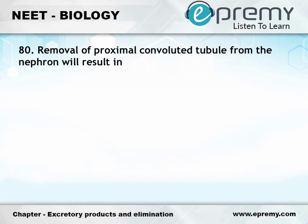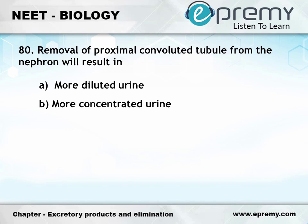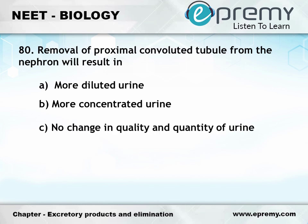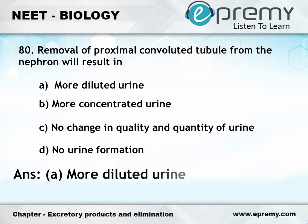Question number 80: Removal of proximal convoluted tubule from the nephron will result in — Option A: More diluted urine, Option B: More concentrated urine, Option C: No change in quality and quantity of urine, Option D: No urine formation. The answer is Option A: More diluted urine.